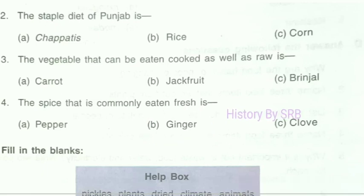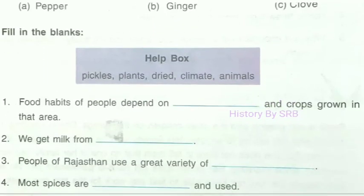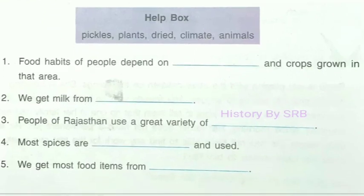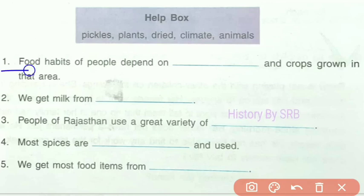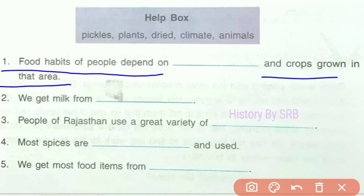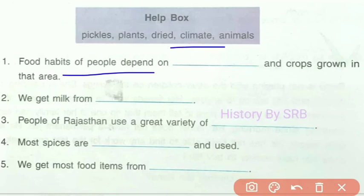Next is question B — fill in the blanks. The first blank: food habits of people depend on the climate and crops grown in that area. So the answer is climate and crops grown in that area.